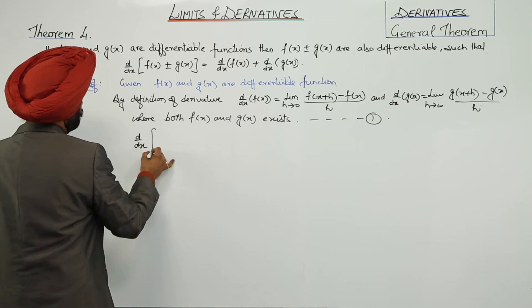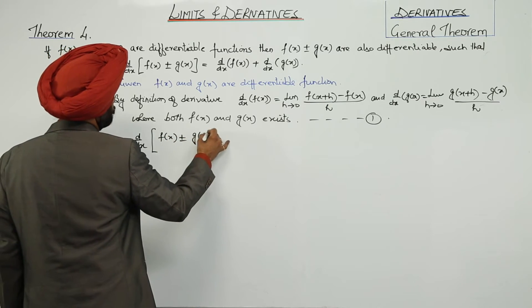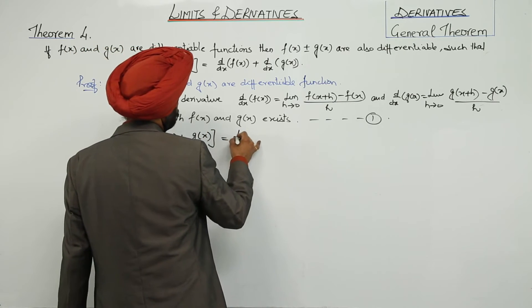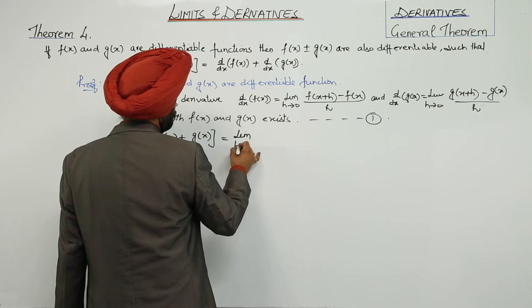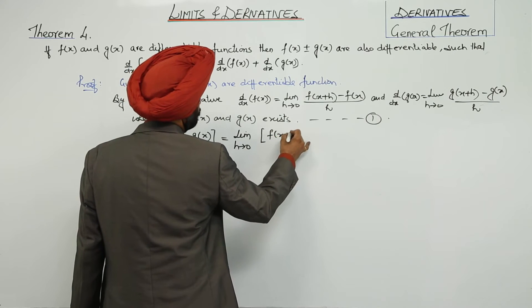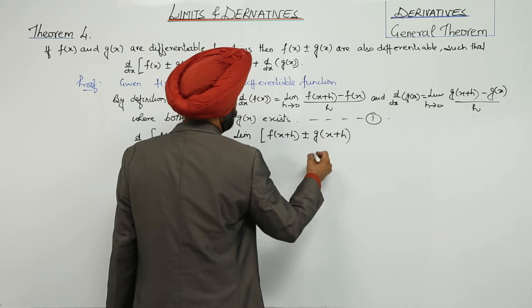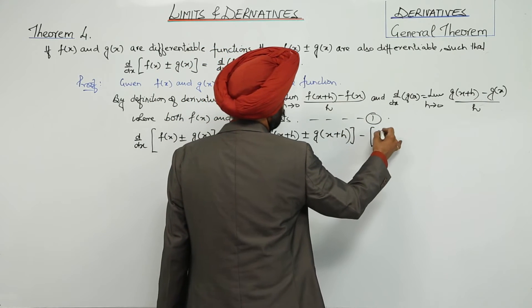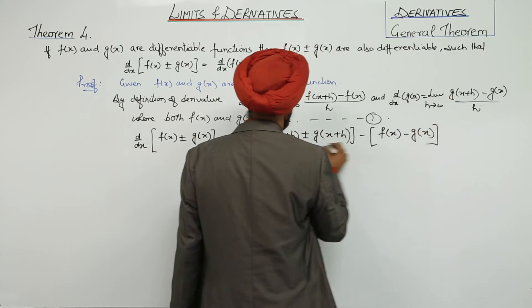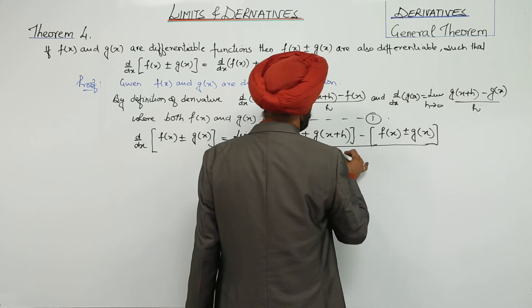Now d/dx of [f(x) ± g(x)] will be written as limit as h approaches 0 of [f(x+h) ± g(x+h) - f(x) ∓ g(x)]/h.